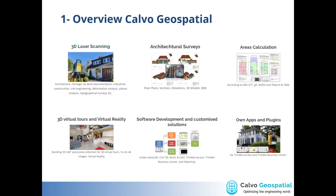As Calvo Geospatial Consulting, we are focused on 3D laser scanning, especially architectural surveys and area calculations. We also do 3D virtual tours with virtual reality using Matterport cameras, and a lot of software development in customized solutions under AutoCAD, CV3D, Revit, and RGIS — but mostly in the last four years since around 2018, with much more focus on Trimble Access, Trimble Business Center, and SketchUp.